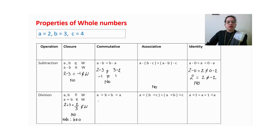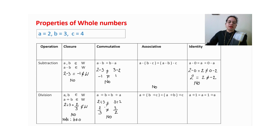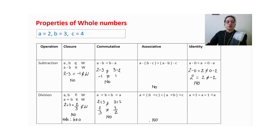For commutative property in division: 2÷3 gives 2/3, and 3÷2 gives 3/2. These are not equal, so we cannot observe commutative property. By logic, if two numbers fail, three numbers also fail, so we cannot observe associative property in division of whole numbers either — but try substituting values yourself.